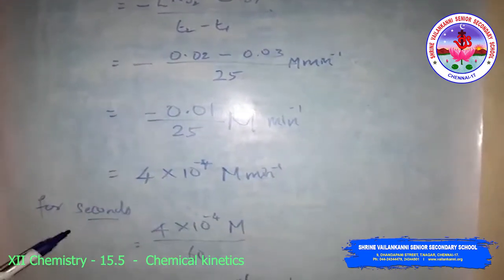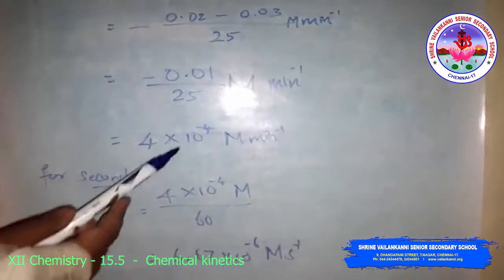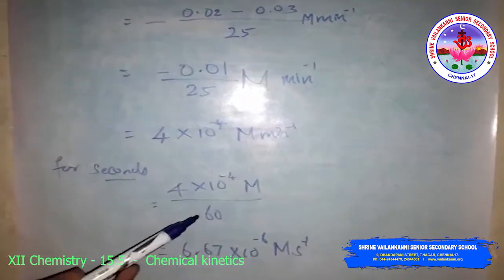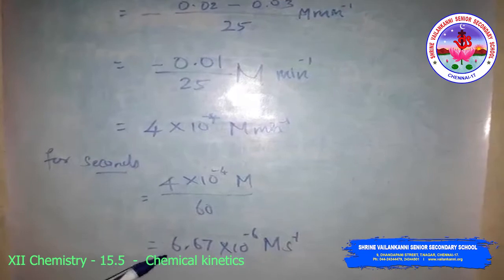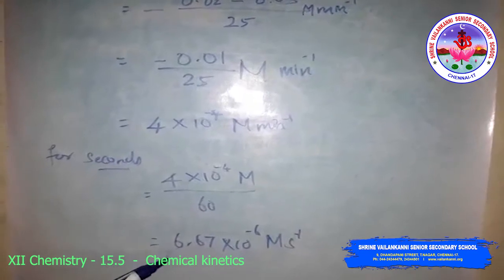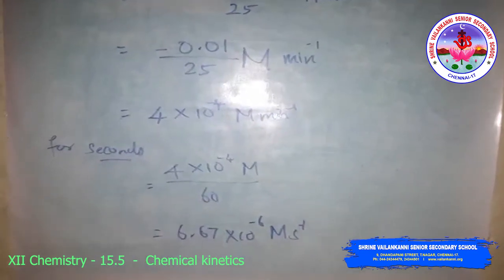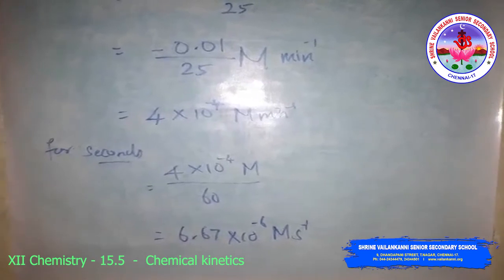To convert to per second, divide by 60. This gives 6.67 × 10⁻⁶ mol L⁻¹ s⁻¹.